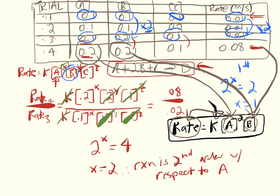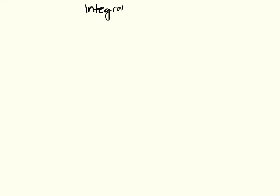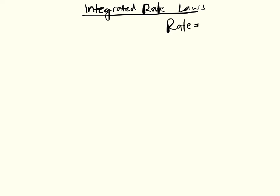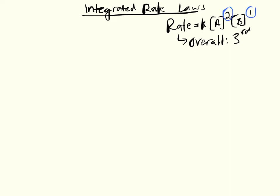Manipulating problems using data sets is an important skill. We also learned to use this data with graphs — specifically the integrated rate laws, which are equations derived using calculus by integrating the rate laws. We learned to recognize the order of a reaction based on the graph. For the example reaction with rate = K[A]²[B]¹, the overall order is third order — you add up all the exponents.